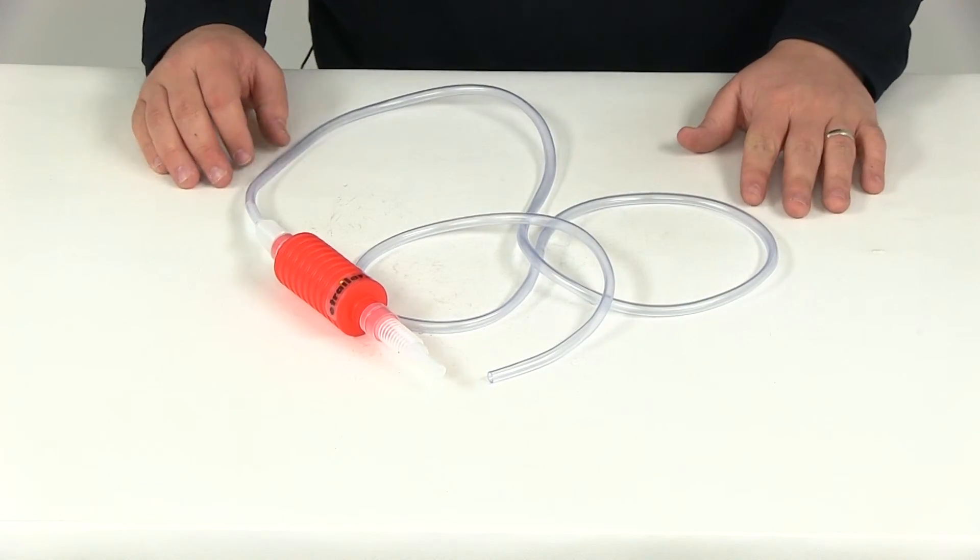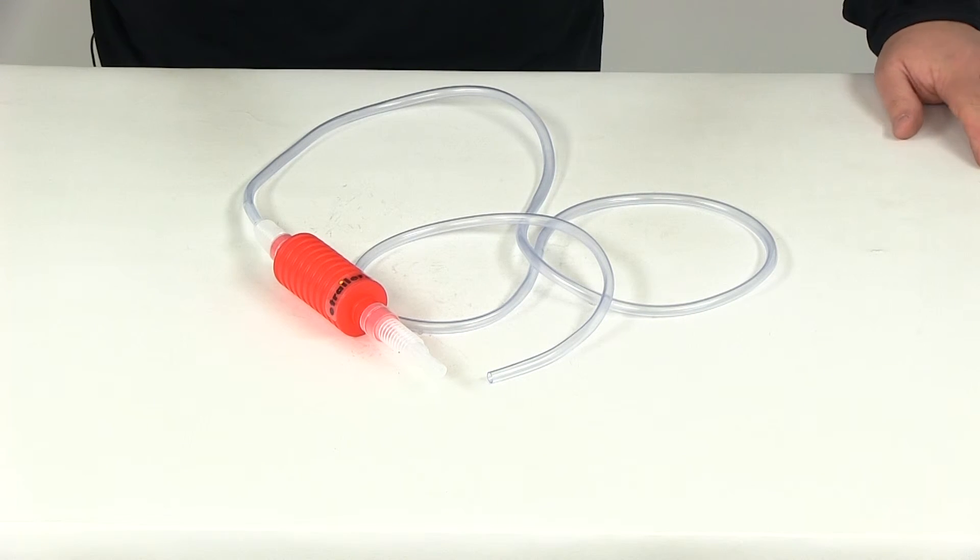That's going to do it for our review of part number FT10802, the Flow Tool siphon with a six foot long hose.